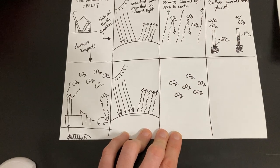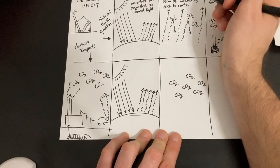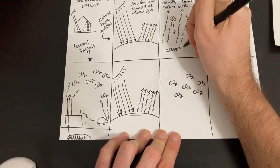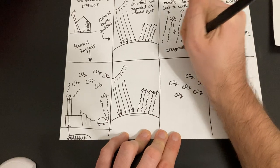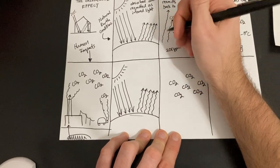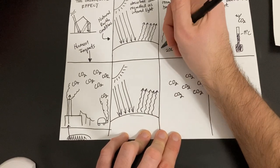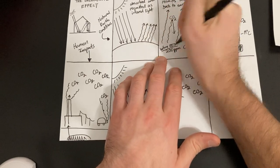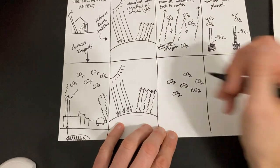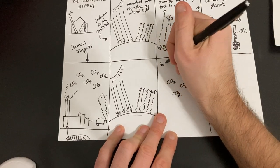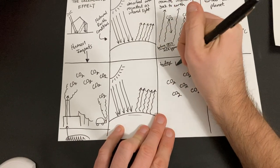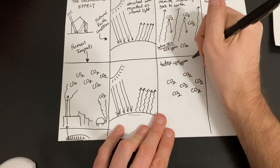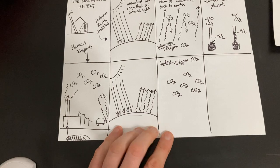Now before the industrial revolution, before 1850, there was about 200 parts per million of CO2 in the atmosphere. Today, we're at about 414 parts per million of CO2. That's a lot.